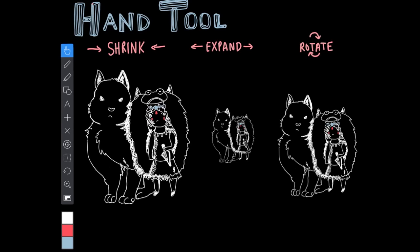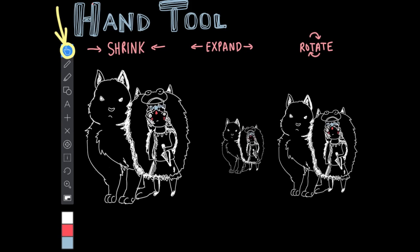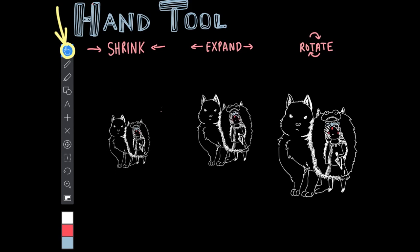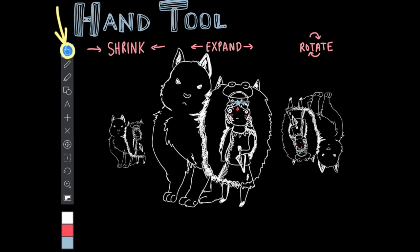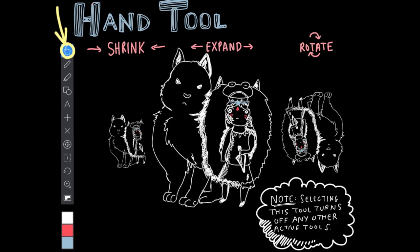The toolbar is located on the left-hand side of the screen. The hand tool located here allows you to freely move objects or drawings around the screen. You can even scale or rotate an object by pinching, expanding, or rotating it with two fingers. Note that selecting this tool turns off any other active tools.